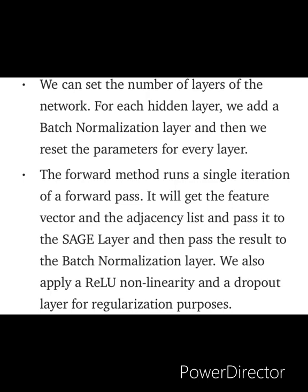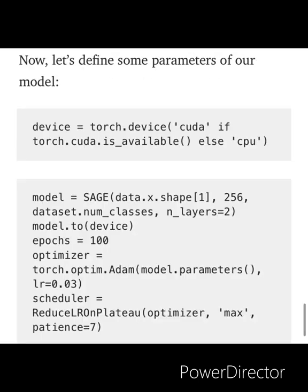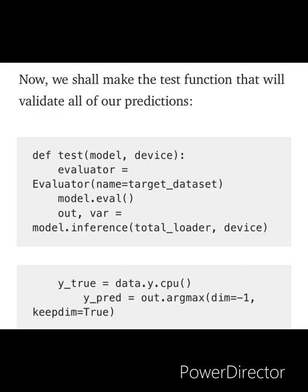If you are interested in learning these fundamental parameters, I have a full-fledged course available on Udemy. Moving on to define parameters for this model, we have a SAGE model with the dataset number of classes, 2 layers, and we run it for 100 iterations. We set the learning rate to 0.03 and then reduce this using an optimizer, because our ultimate aim is to optimize a loss function.